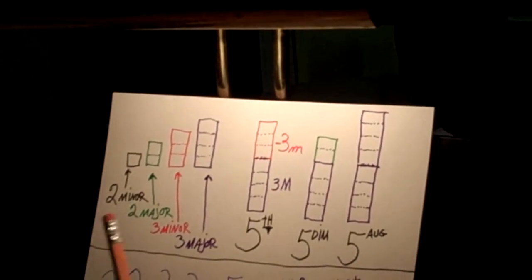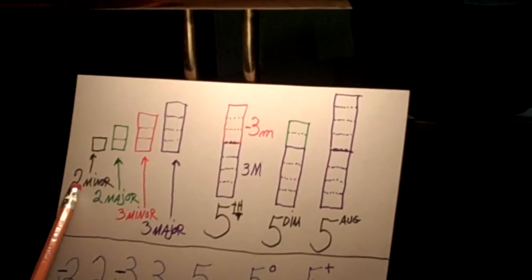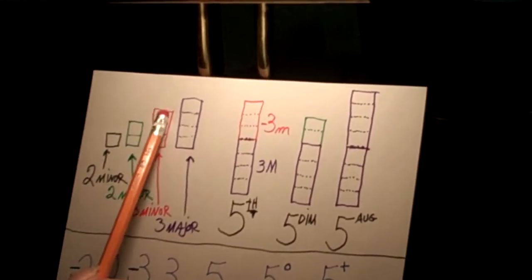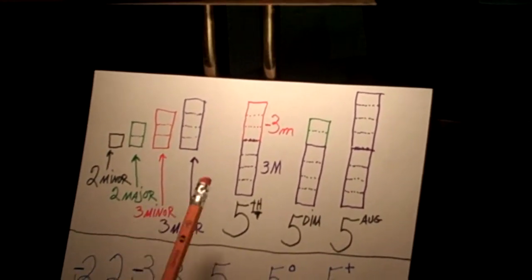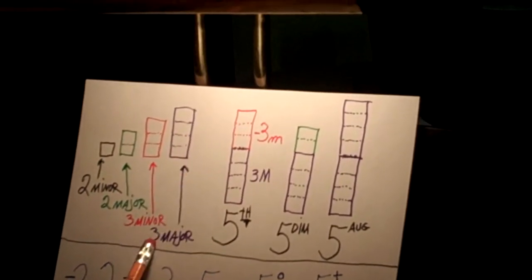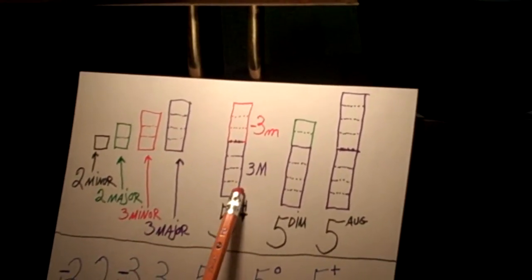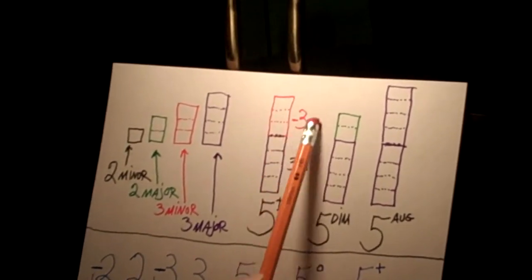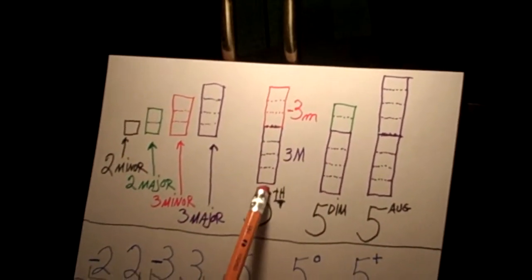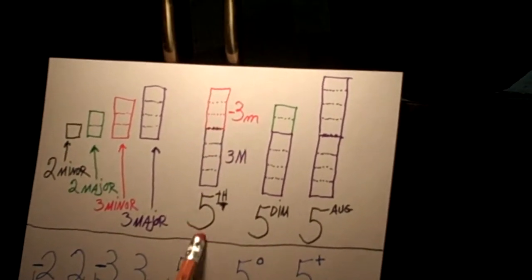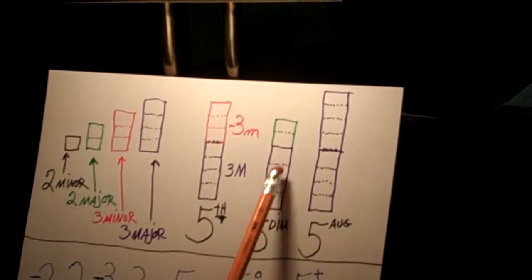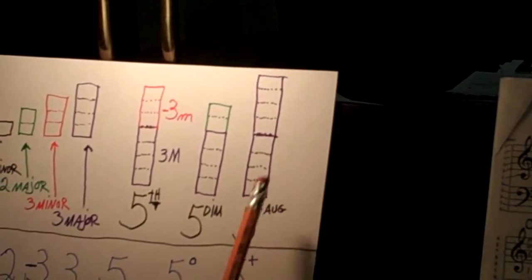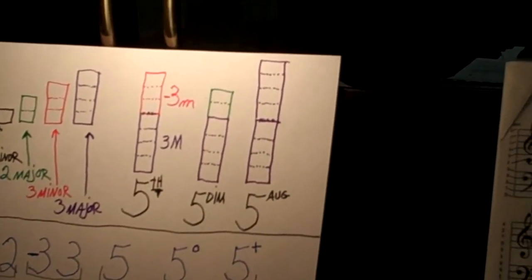So this is basically what the intervals are. One chromatic tone: minor second. Two chromatic tones: major second. Three chromatic tones: minor third. Four chromatic tones: major third. Four plus three — a major third plus a minor third — a perfect fifth. Seven half steps: a perfect fifth. If we have six half steps, we have a diminished fifth. If we have eight half steps, we have an augmented fifth.